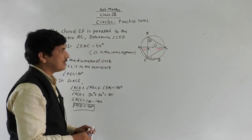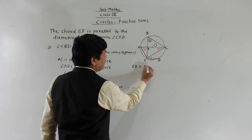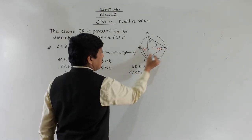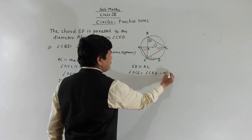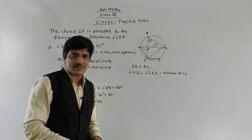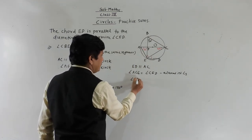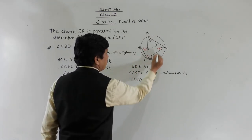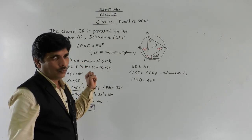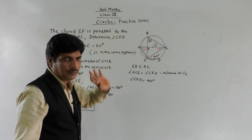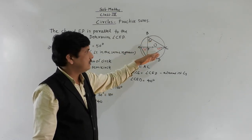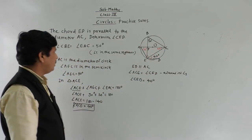ED is parallel to AC, and EC is a transversal. By alternate interior angles, angle ACE is equal to angle CED. Therefore angle CED is also 40 degrees. In this example we used multiple properties: angles in the same segment are equal, the angle in a semicircle is a right angle, and alternate interior angles are equal. See carefully and solve this in your notebook.